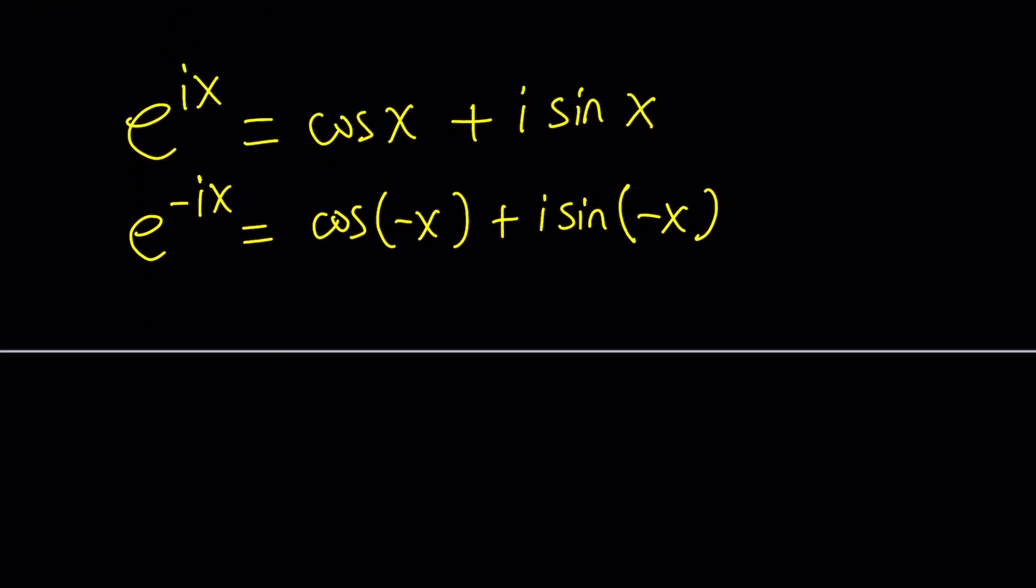So cosine is an even function, cosine of negative x is the same as cosine of x. And sine is an odd function, sine of negative x is the opposite of sine x, which is negative sine x.